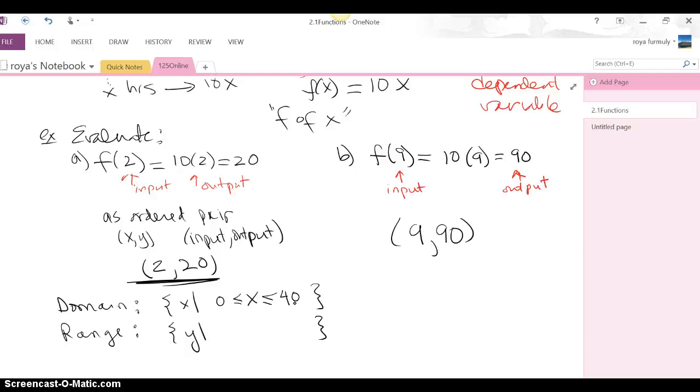The range is what the outputs are. Well, if I don't work at all, I don't make any money. And if I work my maximum 40 hours, getting 10 bucks an hour, I would get $400. So the range is the minimum gross pay is 0 and the maximum gross pay is 400.